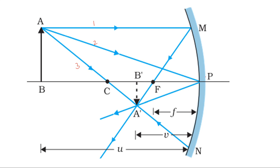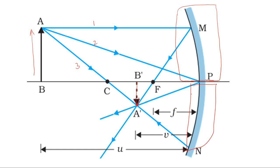The upper half part of the mirror still follows the law of reflection. The image is still formed for the full object, because even with the lower half covered by an opaque substance, the upper half continues to reflect light and form the image.